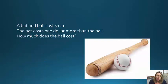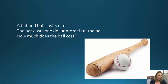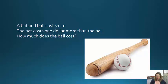Here's an example of the tension between System 1 and System 2. Here's a famous problem that's been given to hundreds and hundreds of students — it's called the bat and ball problem. A bat and a ball cost $1.10. The bat costs $1 more than the ball. How much does the ball cost? Take a second and think about this problem.